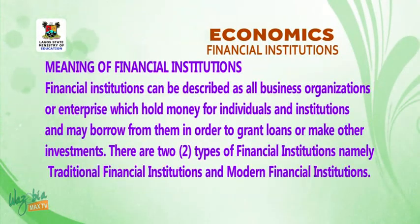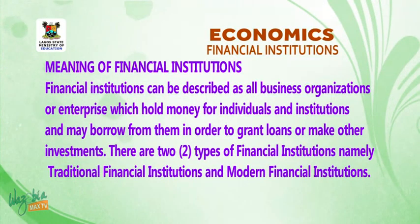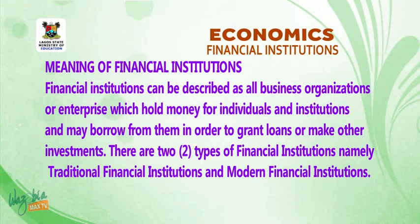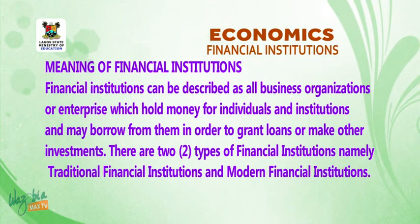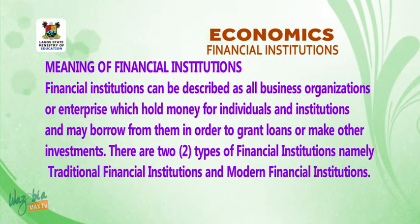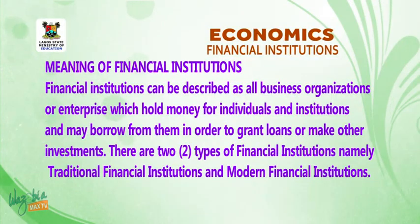Meaning of financial institutions. Financial institutions can be described as all business organizations or enterprises which hold money for individuals and institutions and may borrow from them in order to grant loans or make other investments. There are two types of financial institutions: traditional financial institutions and modern financial institutions.